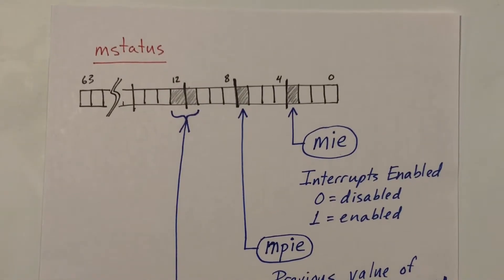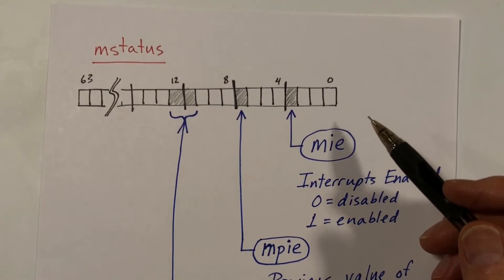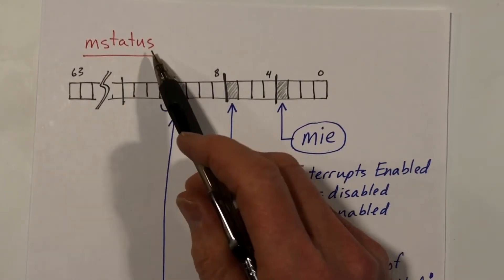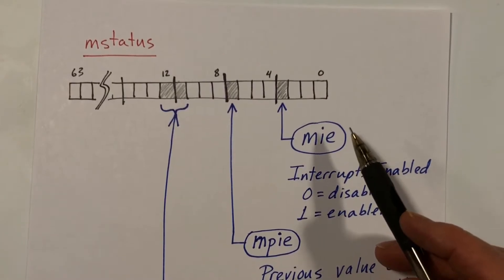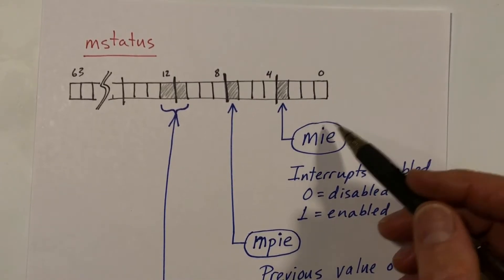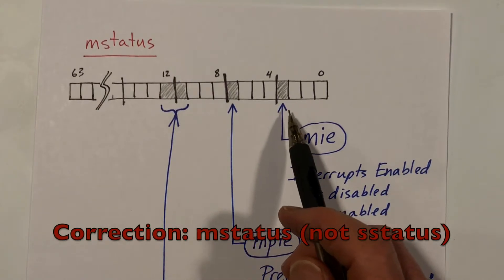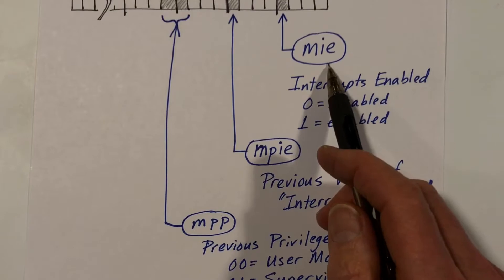Most of the kernel runs in supervisor mode, but a little bit runs in machine mode, so now I'll talk about trap processing in machine mode — it's essentially the same idea. There's another register called mStatus. It might be a mirror copy of the same register, but you can think of it as a separate register. Like the s-status register, it has bits for disabling or enabling interrupts and for saving the previous value of the interrupts enabled bit.